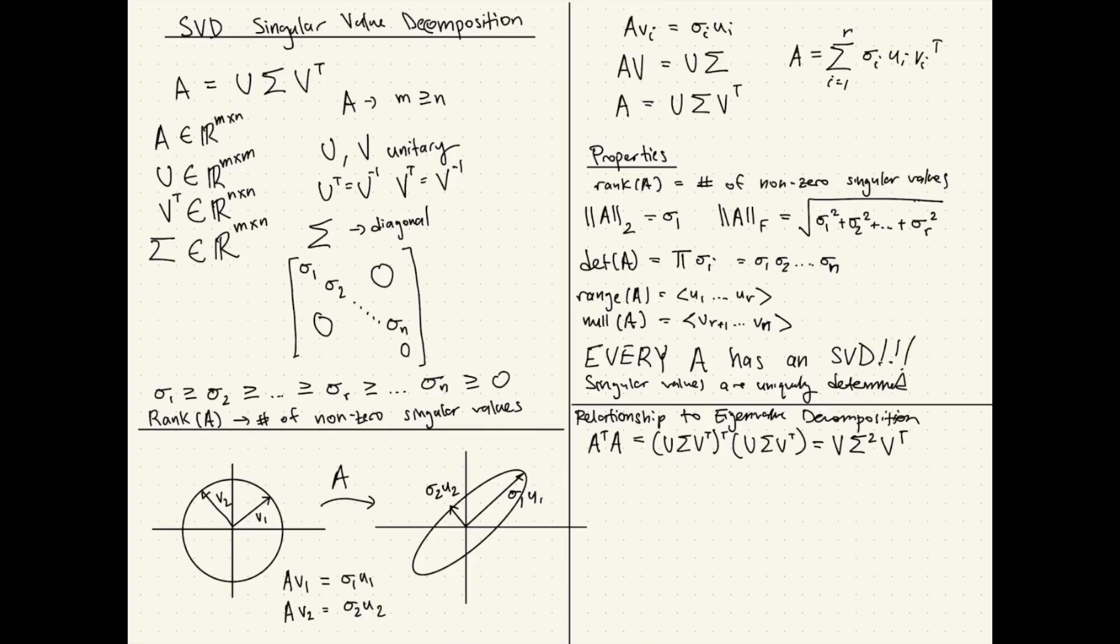Huh, we're getting a decomposition where we have a diagonal matrix in the middle, and on the sides is the same column vectors making up a matrix and making up some kind of space. One of them is transpose of the other. Okay, that's already screaming eigenvalue.